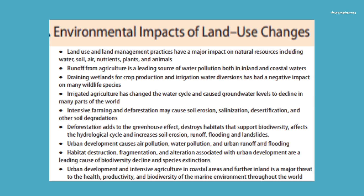Irrigated agriculture has changed the water cycle and caused underground water levels to decline in many parts of the world. Intensive farming and deforestation may cause soil erosion, salinization, desertification, and other soil degradations. Deforestation adds to the greenhouse effect, destroys habitats that support biodiversity, affects the hydrological cycle, and increases soil erosion, runoff, flooding, and landslides.